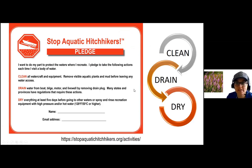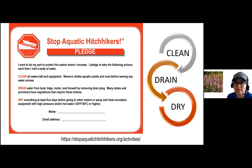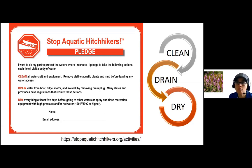In addition to invasive species that spread on land, there are also aquatic hitchhikers that can spread in our water sources. You can take a pledge to stop aquatic hitchhikers. Ways to stop their spread include cleaning all watercraft and equipment — canoes, kayaks, motor boats, stand-up paddleboards. Remove visible aquatic plants and mud before leaving the water access site. You also need to drain water from the boat, bilge, motor, and live well by removing the drain plug — important when thinking about how water can transport aquatic hitchhikers like zebra and quagga mussels.